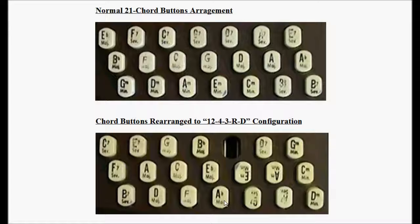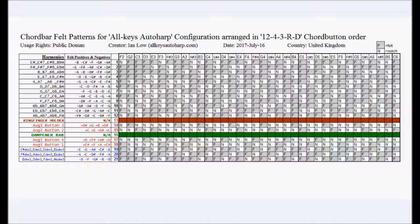If you are converting to this 84-harmony all-keys autoharp configuration, since we don't have the correct buttons for all 84 different harmonies, I recommend using this configuration of buttons from the normal 21 chord buttons to help identify which button represents which chord. Here we have a new table showing the schematic of the positive and negative felt patterns for the 21 different chord bars, arranged in the very latest 1-2-4-3 chord button order. If you're doing the conversion, I recommend watching videos 2, 3, and 14 for walkthroughs, and using this schematic for the most up-to-date ordering.